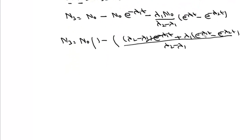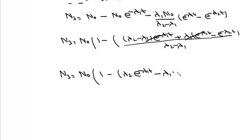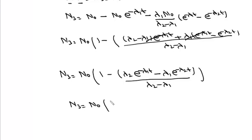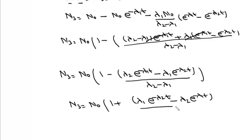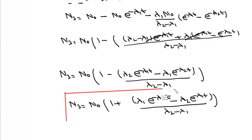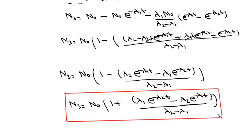After simplification, the λ1·e to the power λ1·T terms cancel, giving N3 equals N0 times 1 plus (λ1·e to the power minus λ2·T minus λ2·e to the power minus λ1·T) upon (λ2−λ1). This is the formula for the number of atoms of C at any time T, completing the proof of the formula for successive disintegration.